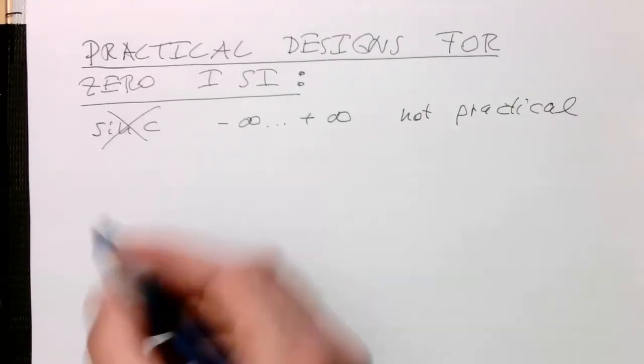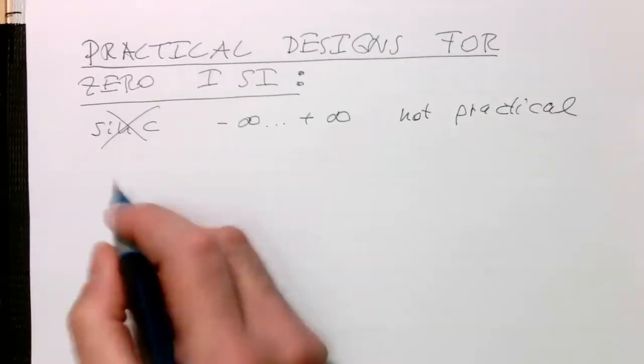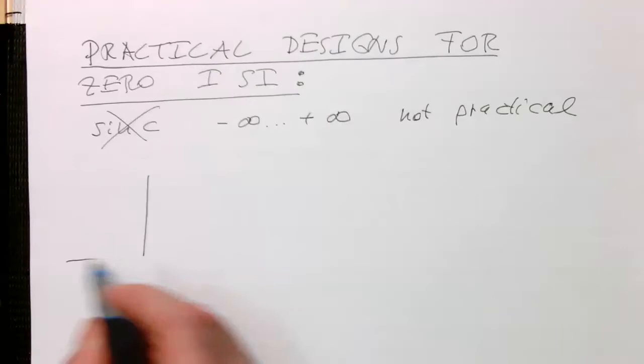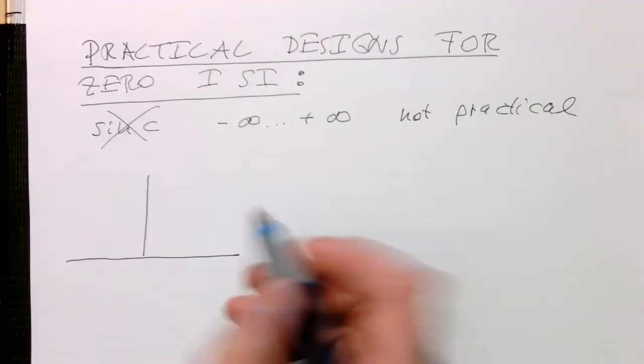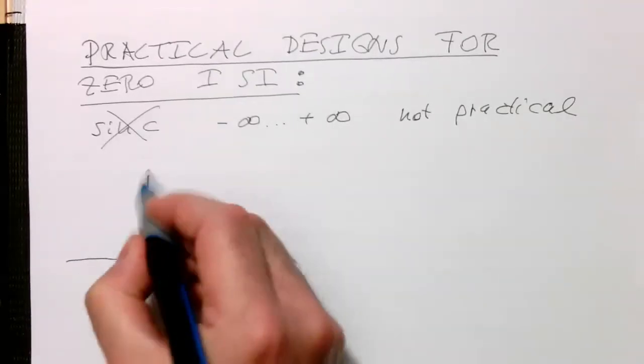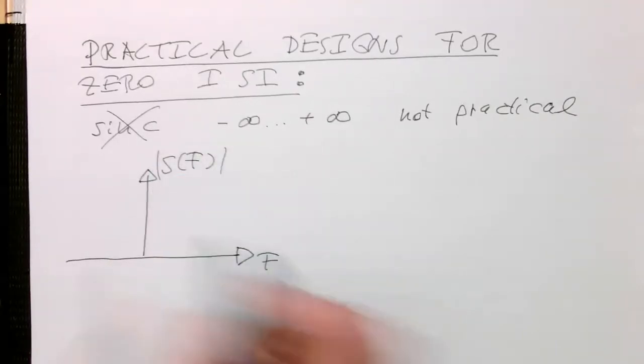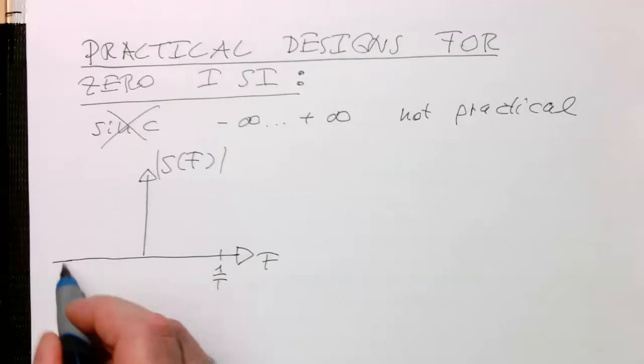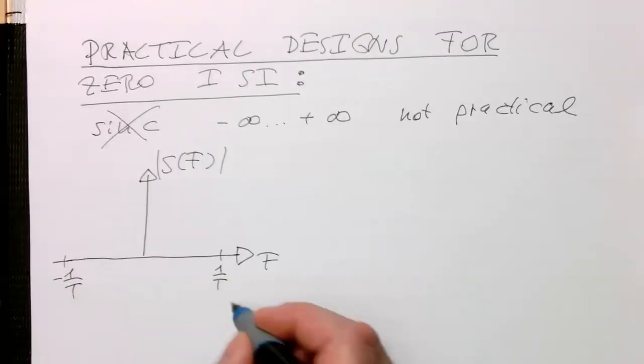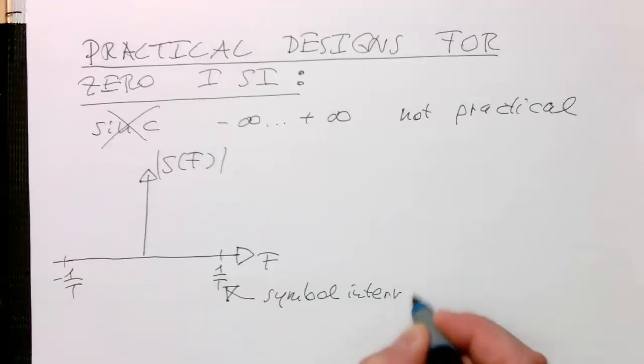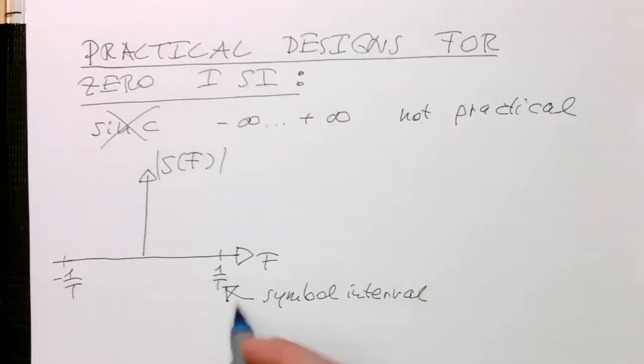So let's start. So the idea is the following. Let's draw a frequency response here. So let's see F and that's our S of F. And the function I'm drawing here goes to one over T and this goes here to minus one over T. T is again our symbol interval. And the one over defines here frequency.